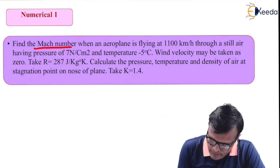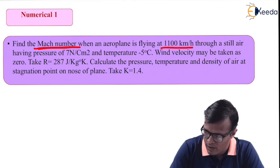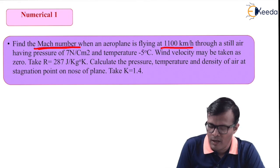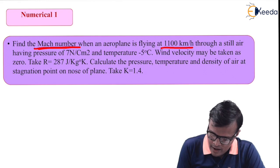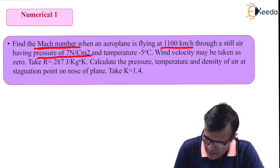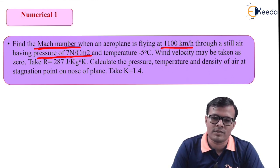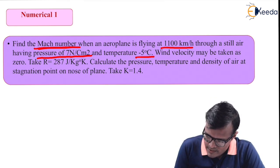Find the Mach number when an aeroplane is flying at 1100 km per hour — the speed is given but its unit is different. The air has pressure of 7 Newton per centimeter square, and Newton per centimeter square is not our standard unit. Temperature is minus 5 degrees centigrade, which we obviously have to convert.